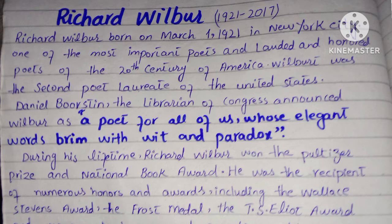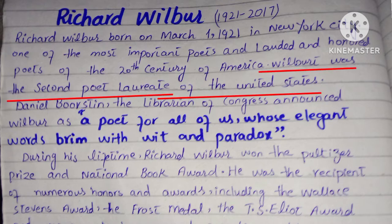Richard Wilbur was born in 1912 and died in 2017. He was born in New York City and is one of the most important and lauded poets of 20th century America. He was the second Poet Laureate of the United States.